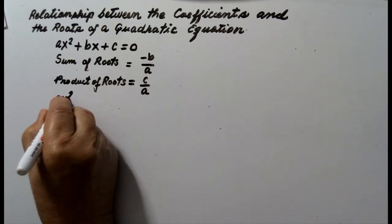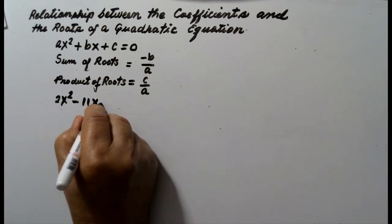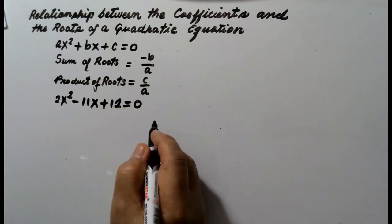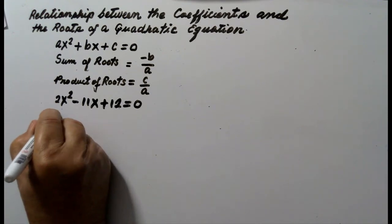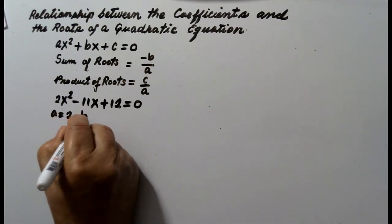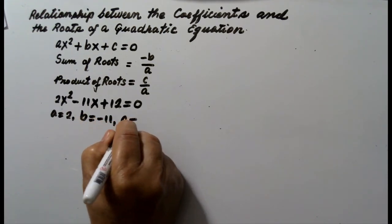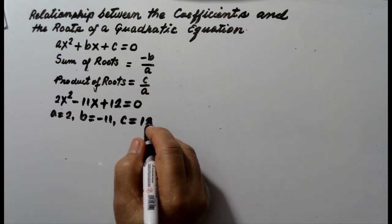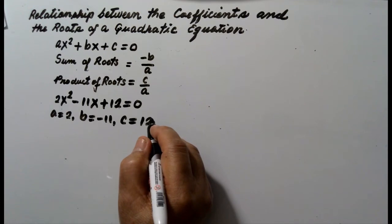2x squared minus 11x plus 12 is equal to zero. In this quadratic equation, a is 2, b is negative 11, and c is 12. Without actually solving the quadratic equation, we can determine the sum and the product of the roots.